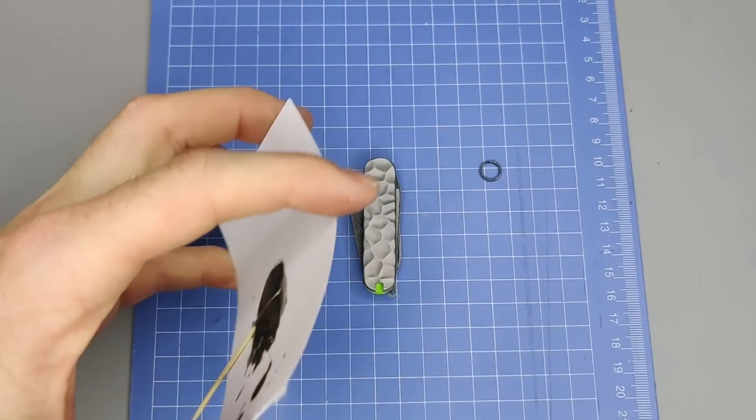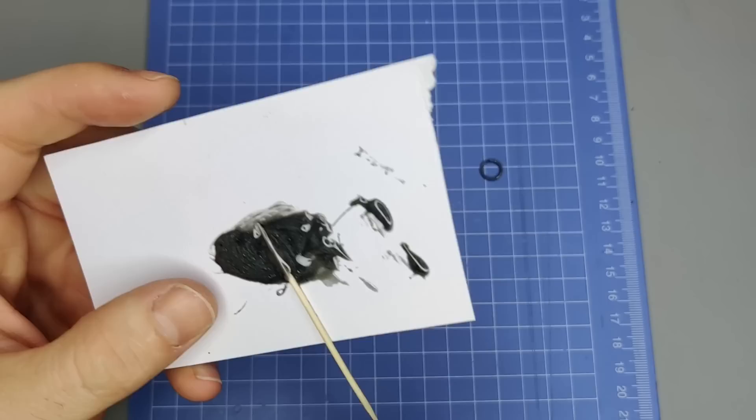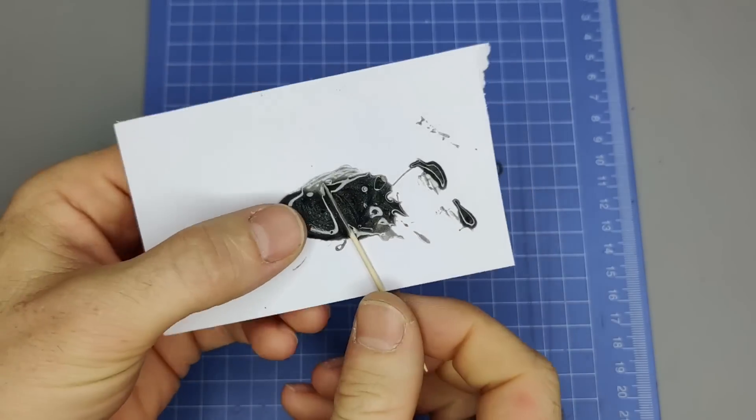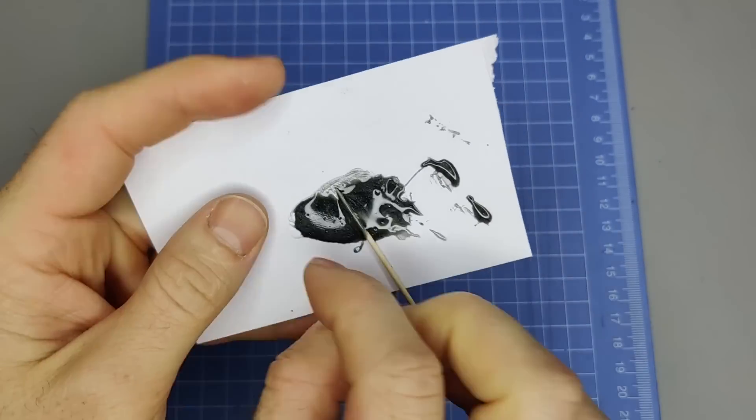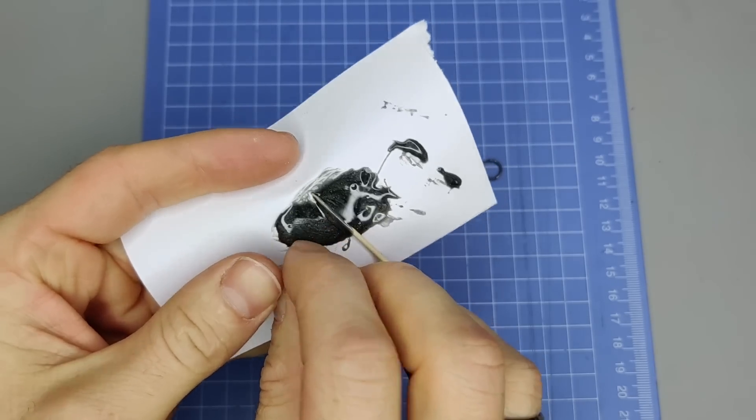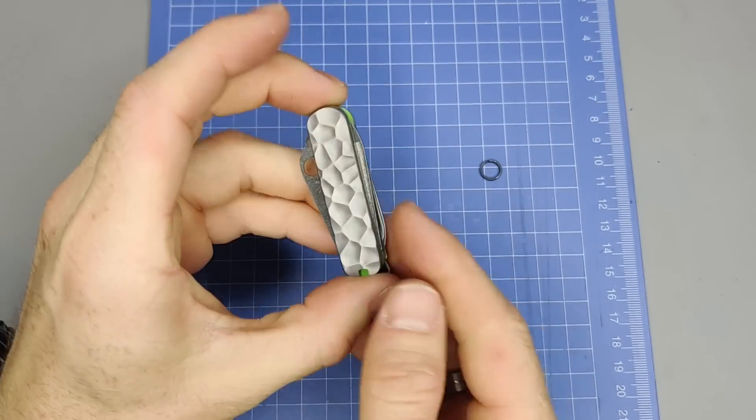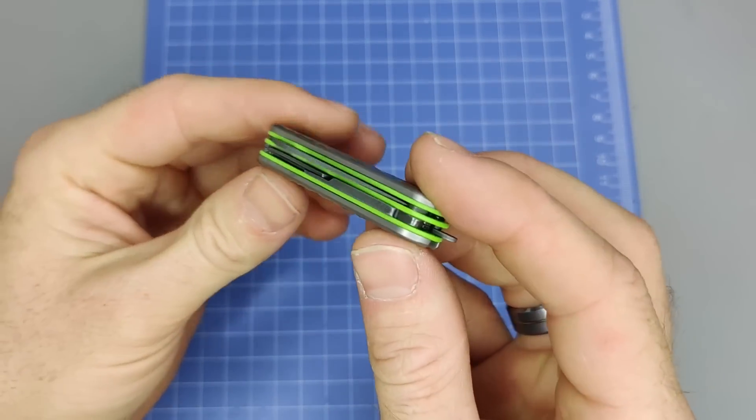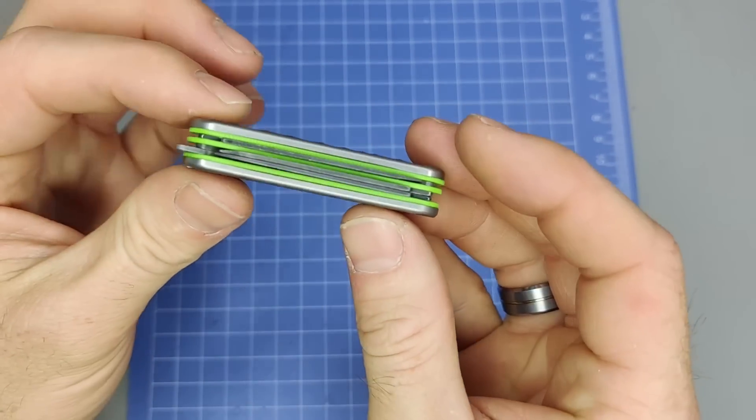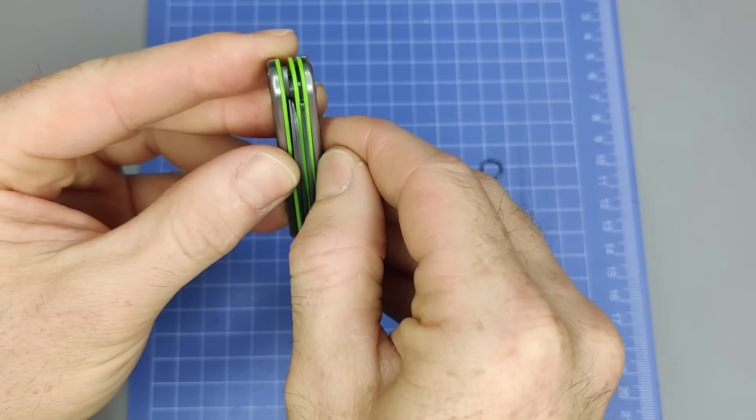Alright, so this has had time to set. And like I said, I'll use this kind of as an example to see, make sure that it's dry. As you can see, this epoxy is hardened, which means that the scales have also set. So that means it's not going to come off.